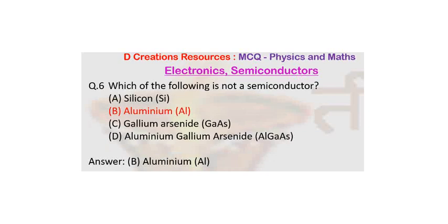Silicon is an elemental semiconductor. Gallium Arsenide is a binary compound semiconductor, while Aluminium Gallium Arsenide is a ternary compound semiconductor.